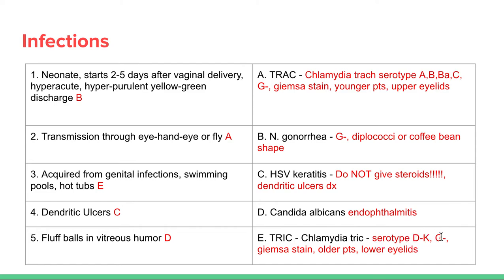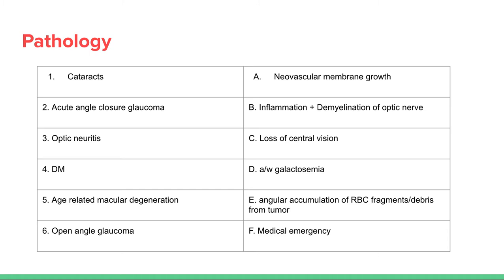Chlamydia acquired from genital infections, swimming pools, and hot tubs — this is serotypes D through K, so think D-to-K as genital-origin. It's gram-negative, identified with Giemsa stain, seen in older patients who are sexually active, and affects the lower eyelids. Number four is dendritic ulcers — seen with herpes HSV keratitis. Do NOT give steroids to these patients; it's contraindicated. Number five is fluff balls in the vitreous humor — these are actually fungal balls, Candida albicans endophthalmitis.